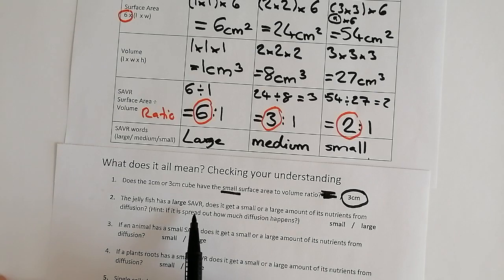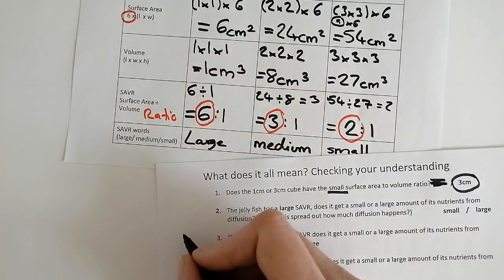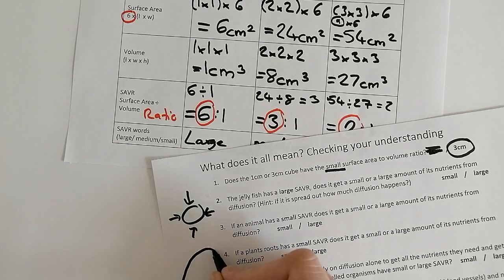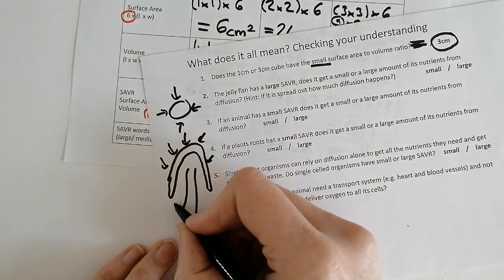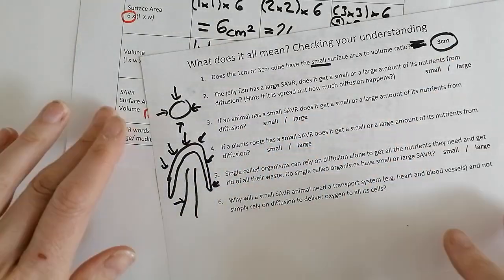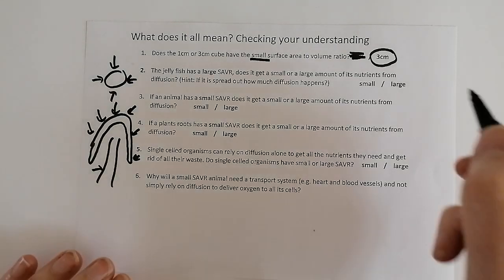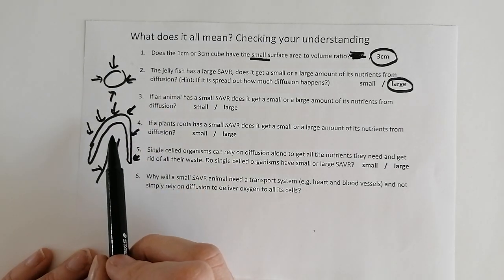The jellyfish has a large surface area to volume ratio. Does it get a small or a large amount of its nutrients from diffusion? If it is spread out, how much diffusion will happen? If you're just a blob, not much would happen. But if you're a jellyfish and you're all spread out, diffusion can take place in lots of different positions. So a jellyfish has a large amount of spread-outedness and therefore a large amount of diffusion. If you have a large surface area to volume ratio, a large amount of diffusion will take place.